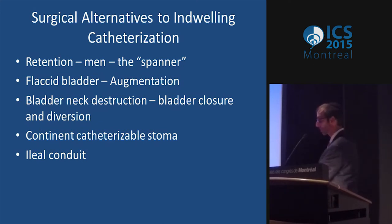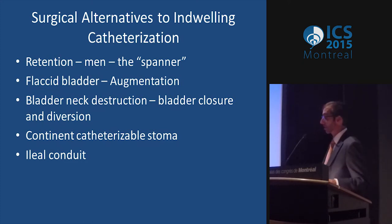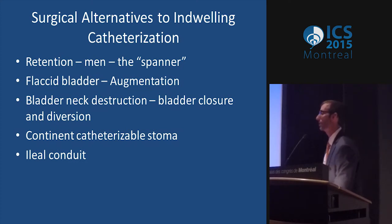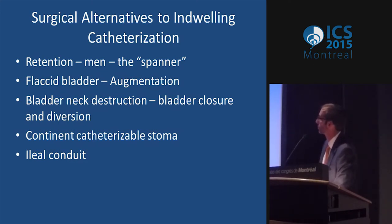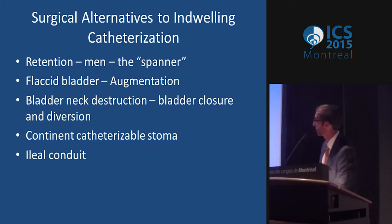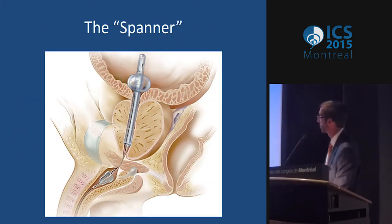As far as alternatives to catheterization, there are a number of other things available. For retention, there's the Spanner — a sort of concealed catheter. Depending on the bladder problem, if someone has a flaccid bladder and can't empty, or has high-pressure bladder needing pressure release, we may do an augmentation. If they've had bladder neck destruction from a long-term urethral catheter, we may have to close the bladder neck and divert them.